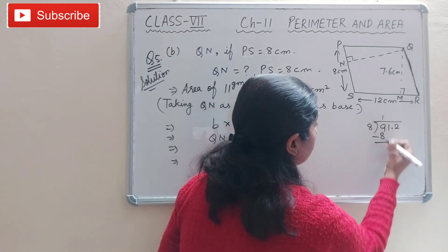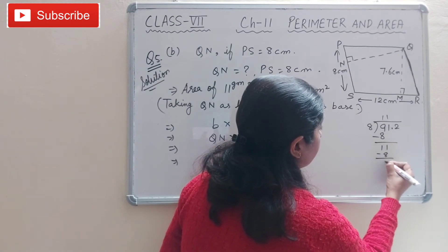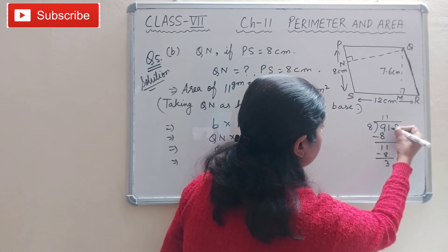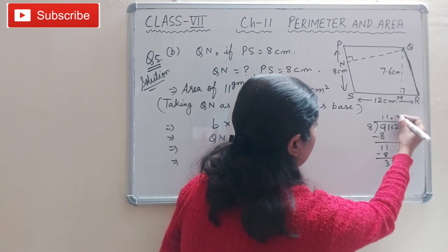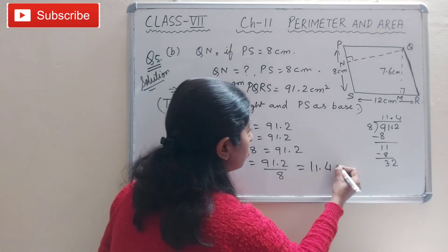Dividing: 8 ones are 8, then 1, then again 8. It is 3. And decimal we have to remove, then 4. So what is the answer? 11.4 cm.